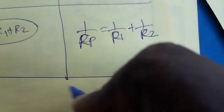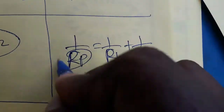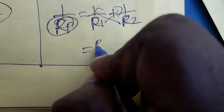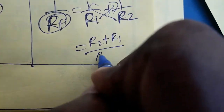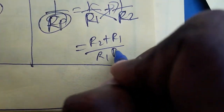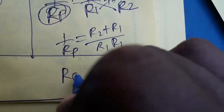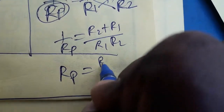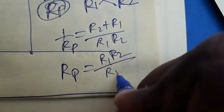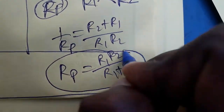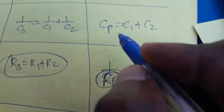So 1/Rp = 1/r1 + 1/r2. By cross multiplication: Rp = (r1 × r2) / (r1 + r2). That is the total resistance in parallel.